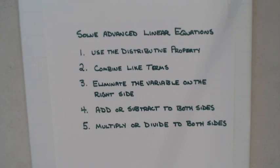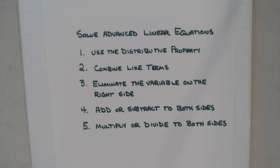In previous videos we've gone over equations that required using the distributive property, combining like terms, eliminating a variable on the right side of the equation, or using adding and subtracting, or multiplying and dividing. What they're going to start doing is giving you equations that may have all of these or just some of them.